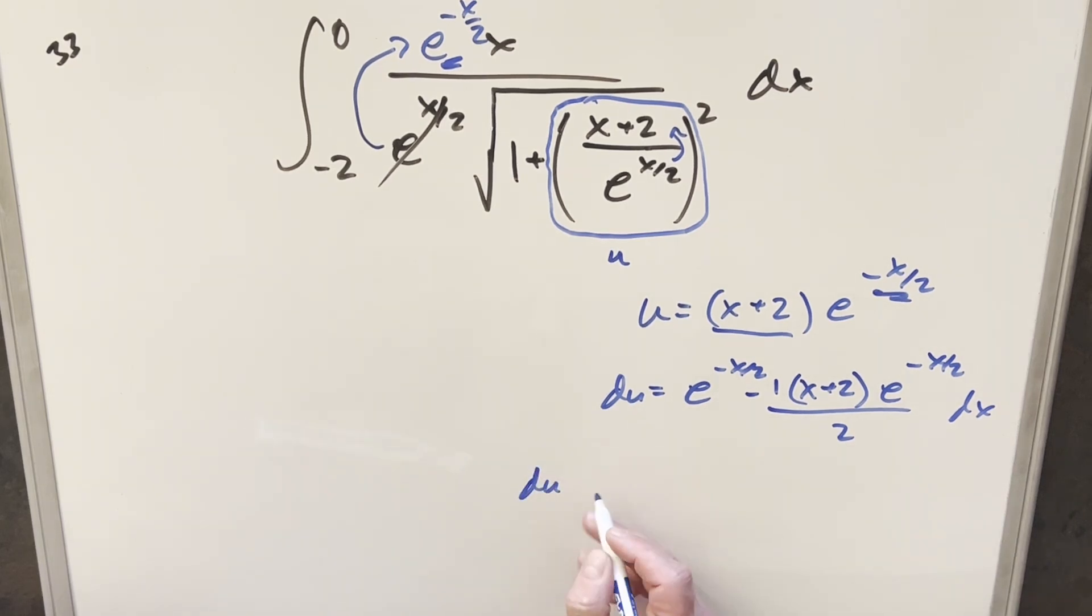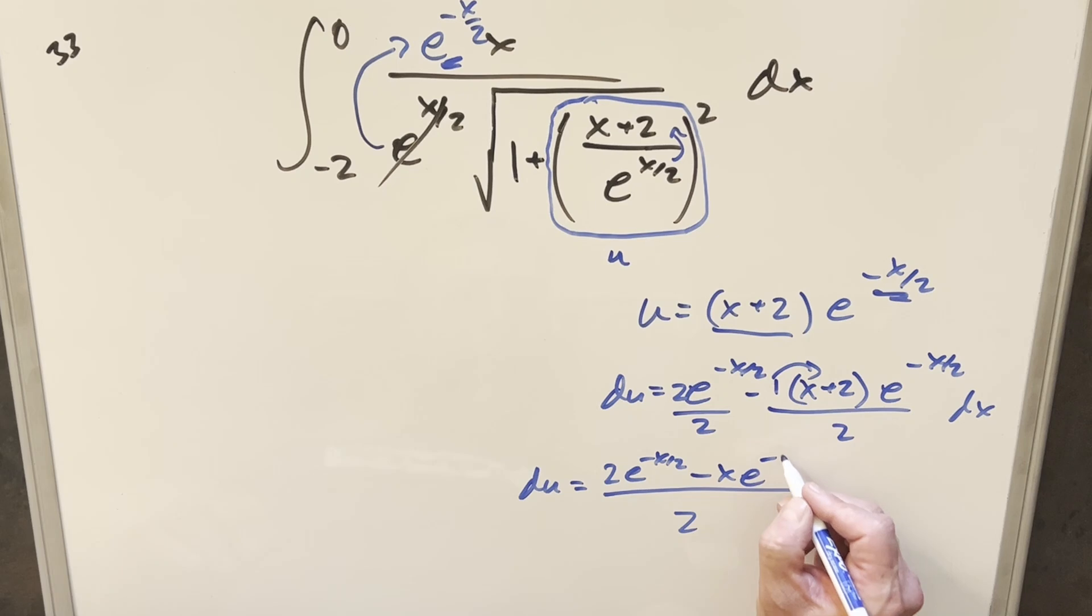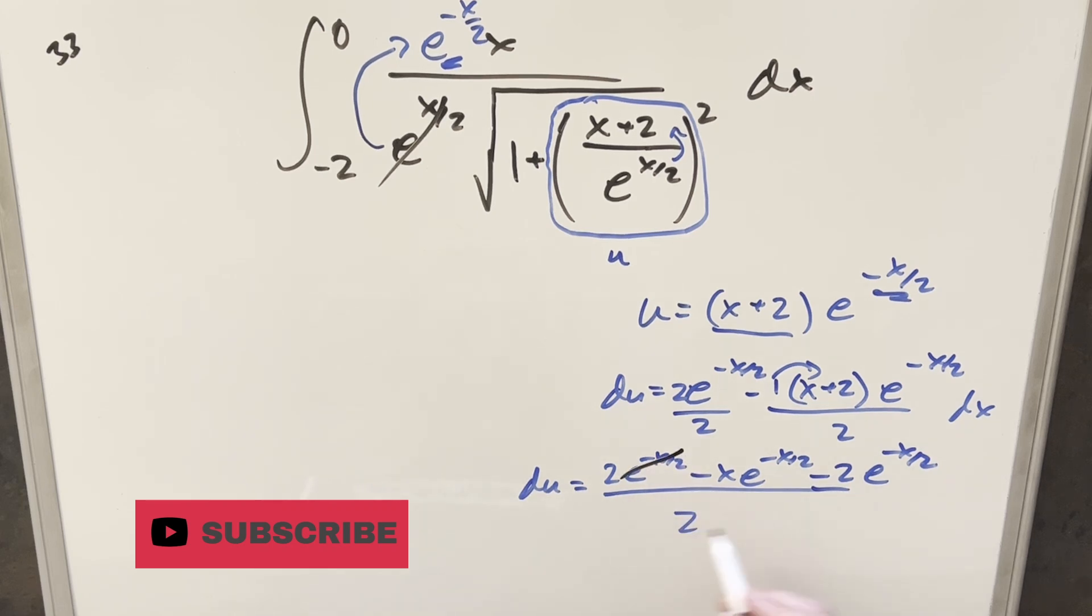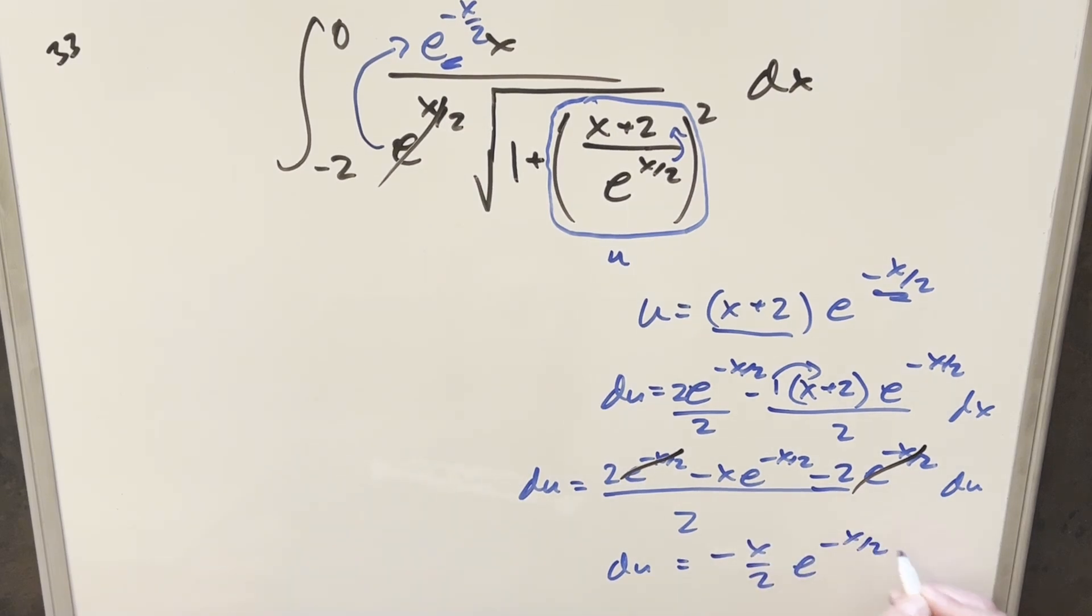But then from here, I think I want to clean this up a little bit. Let's get a common denominator. I can multiply by 2 over 2 here, so we can try to get this all over 2. Then we're going to have 2 e^(-x/2). Multiplying all this part together, distributing in minus 1, we're going to have minus x e^(-x/2). And then for that last part, minus 2 e^(-x/2). But then this is just going to cancel with this. And so we can actually simplify this down to just du equals minus x over 2 e^(-x/2) dx.